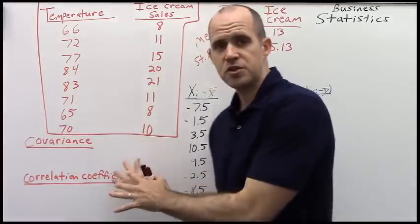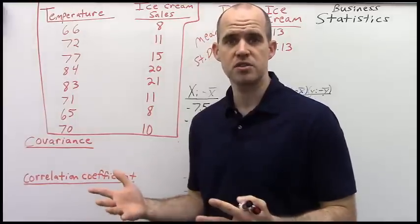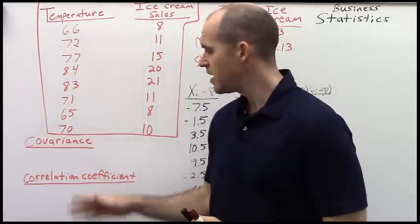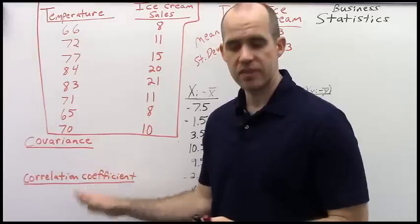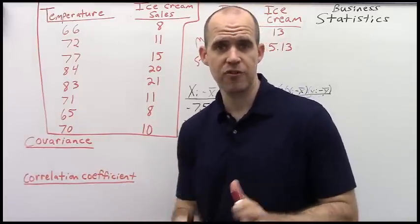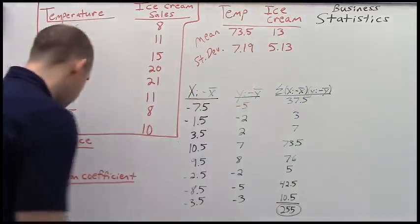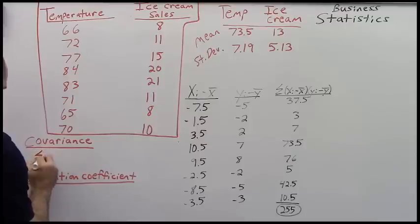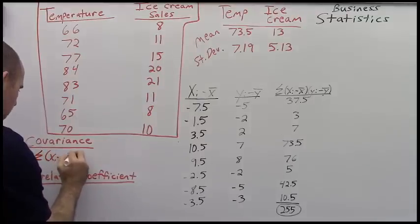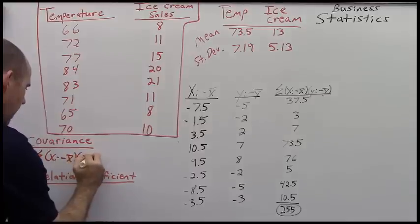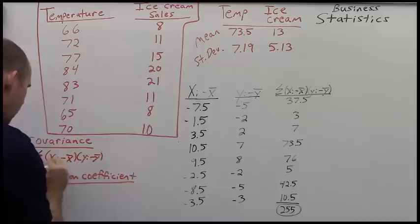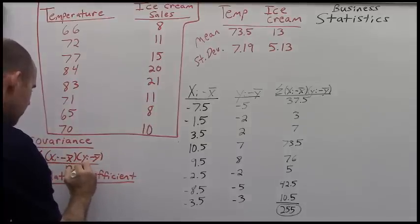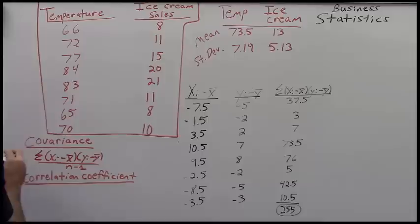So we have two different tools here that will allow us to get at this idea. The first is the covariance and the second is the correlation coefficient. So let me write out the formulas for this. For the covariance, we have the sum of xi minus x bar times yi minus y bar, and we're dividing that by n minus 1.